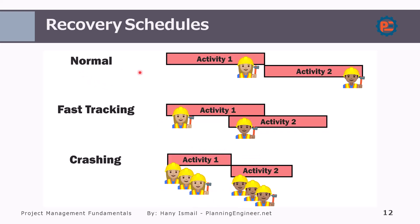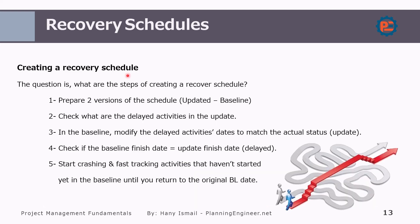In the normal scenario, we have Activity 1, then Activity 2. Fast tracking means we start Activity 2 before Activity 1 is 100% complete, to gain time — reducing the project duration. Crashing will reduce the duration of Activity 1 and Activity 2 individually to complete the project earlier.